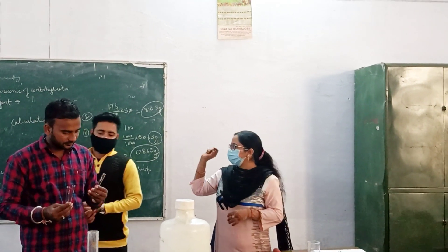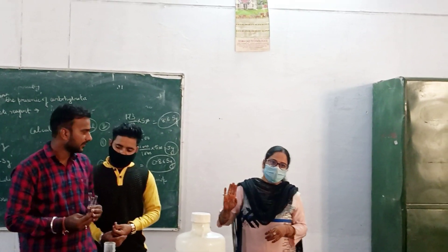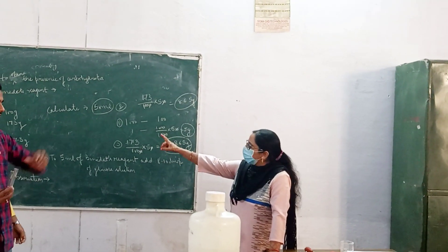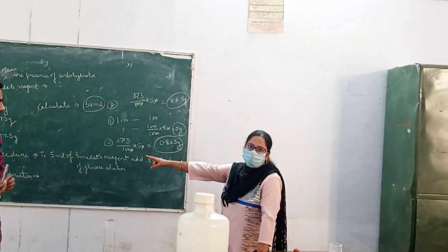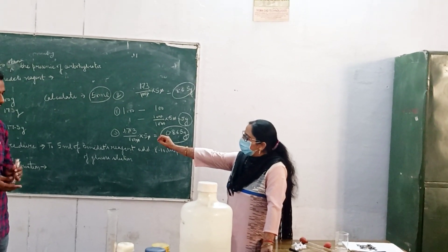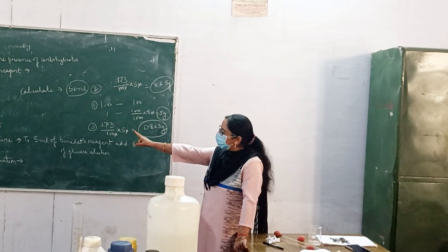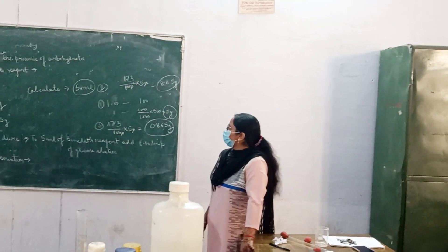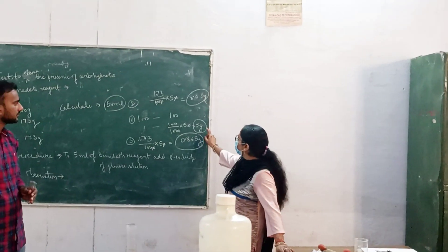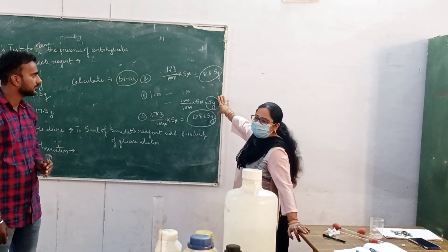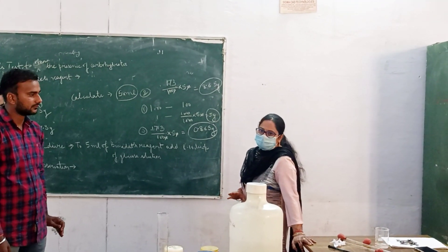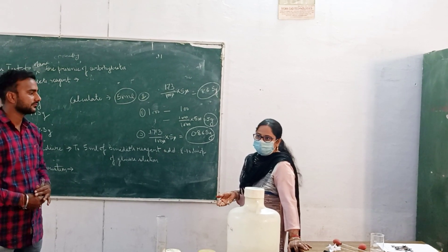So we are taking these three reagents: copper sulphate, sodium carbonate, and sodium citrate. We are weighing for 50 ml. The standard calculations for 1 liter are: sodium carbonate 100 grams, sodium citrate 173 grams, and copper sulphate 17.3 grams. But we have calculated for 50 ml, so these are the scaled-down calculations and we have to weigh accordingly.